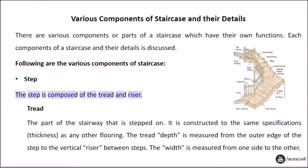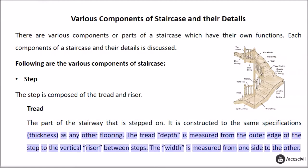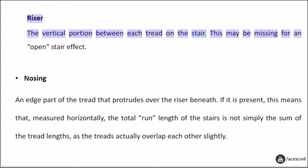The step is composed of the tread and riser. The tread is the part of the stairway that is stepped on; it is constructed to the same specifications — thickness — as any other flooring. The tread depth is measured from the outer edge of the step to the vertical riser between steps, and the width is measured from one side to the other. The riser is the vertical portion between each tread on the stair; this may be missing for an open stair effect.